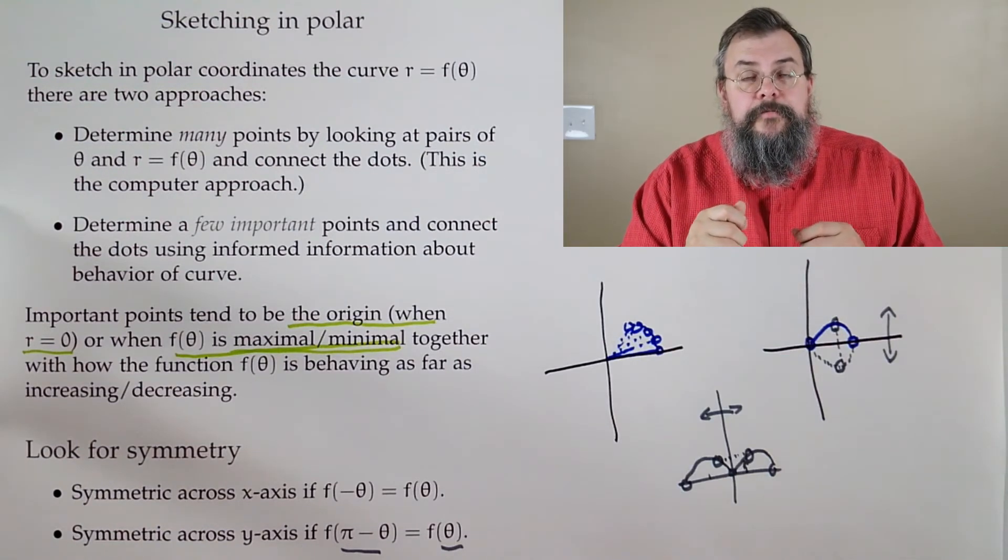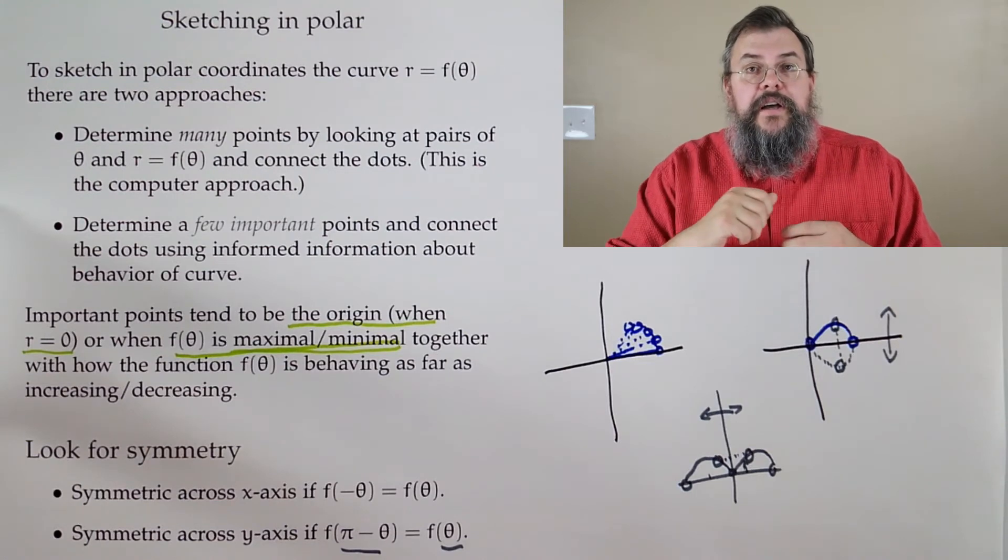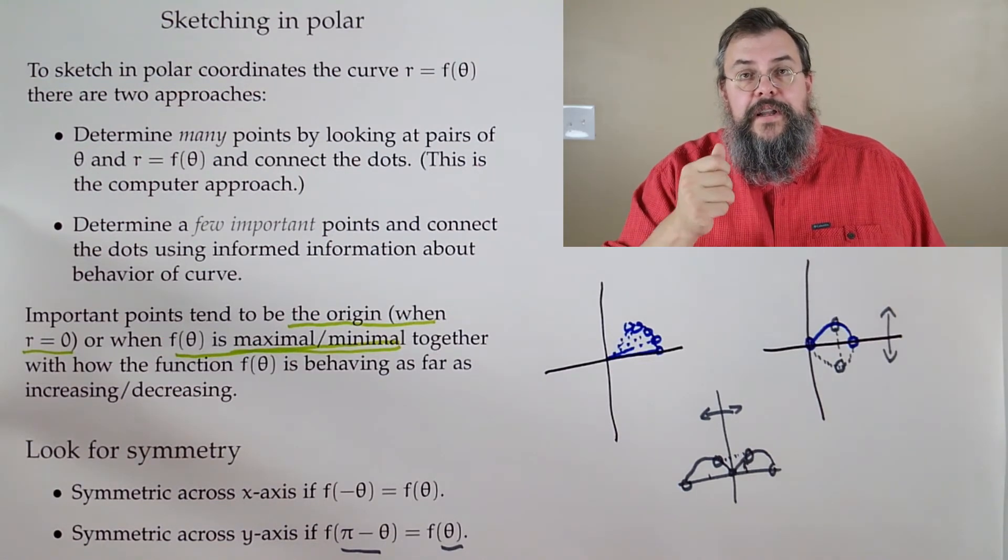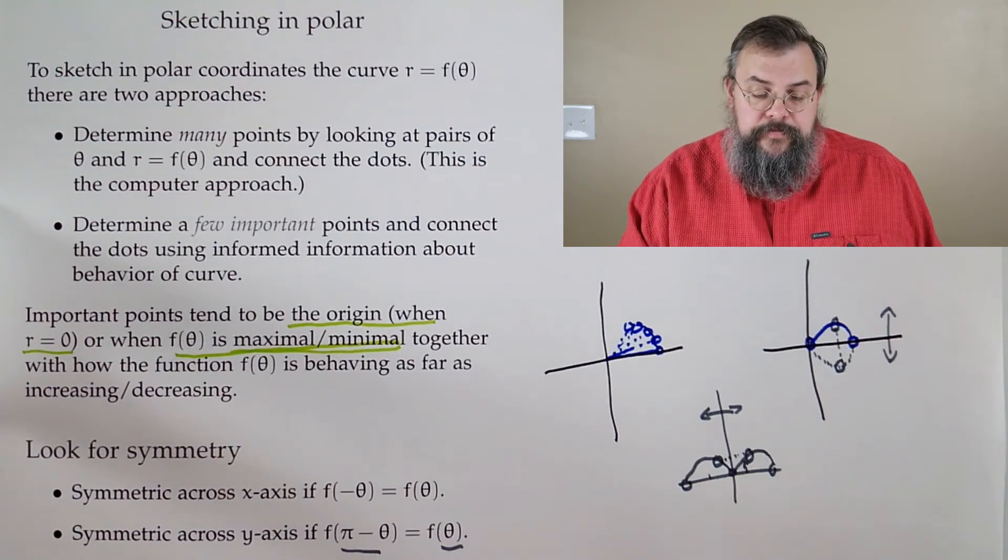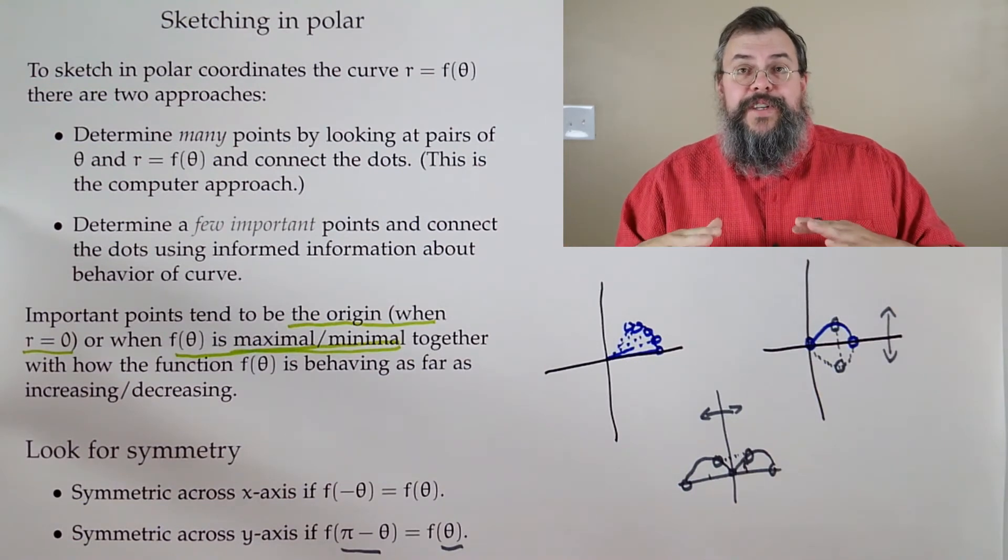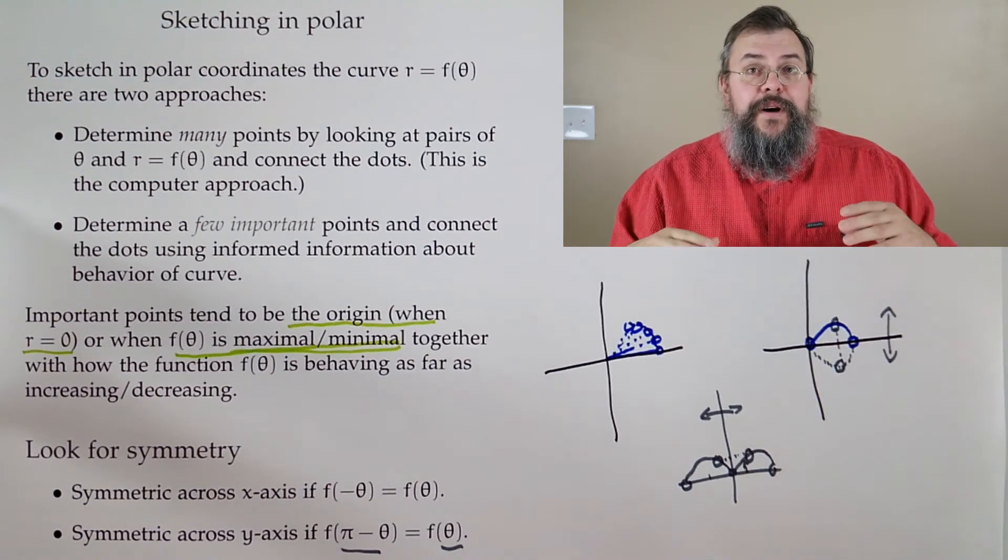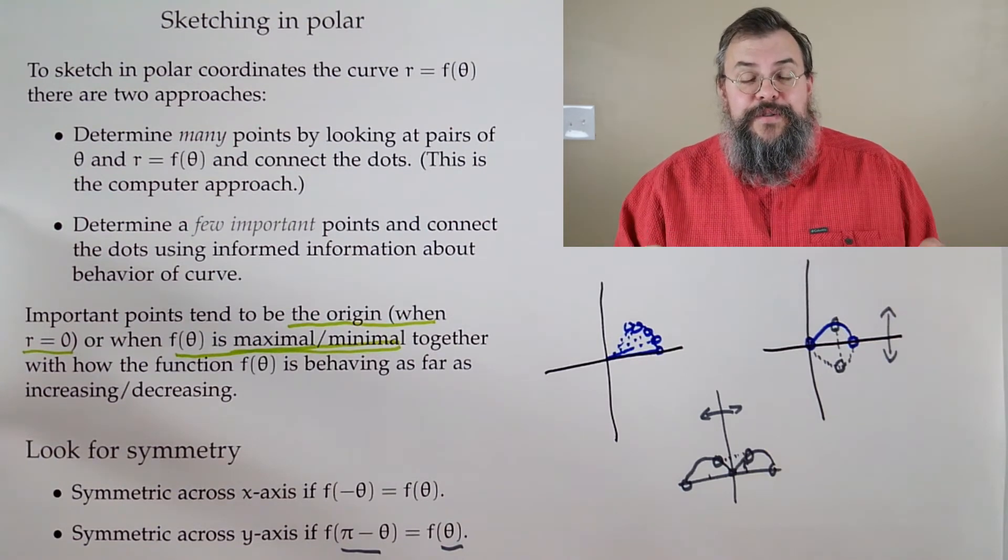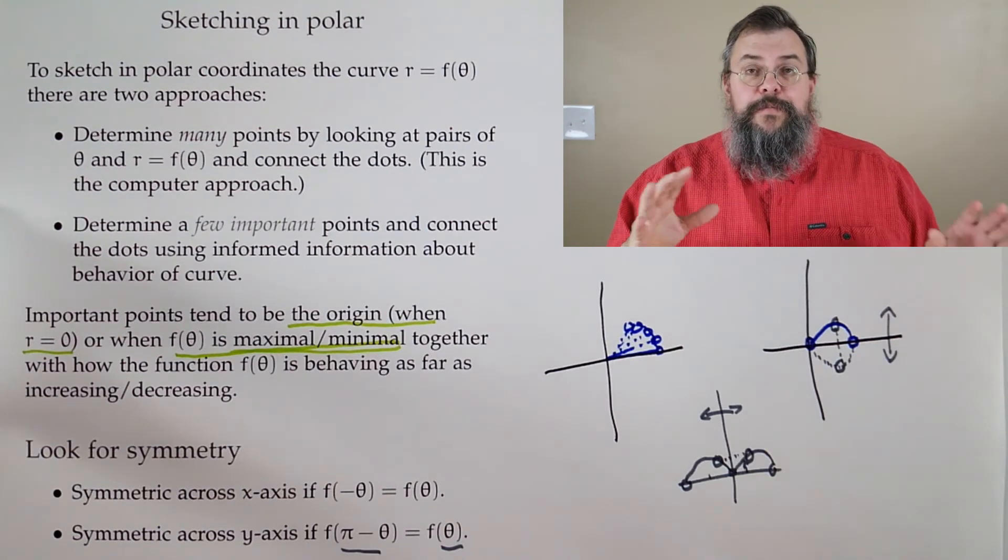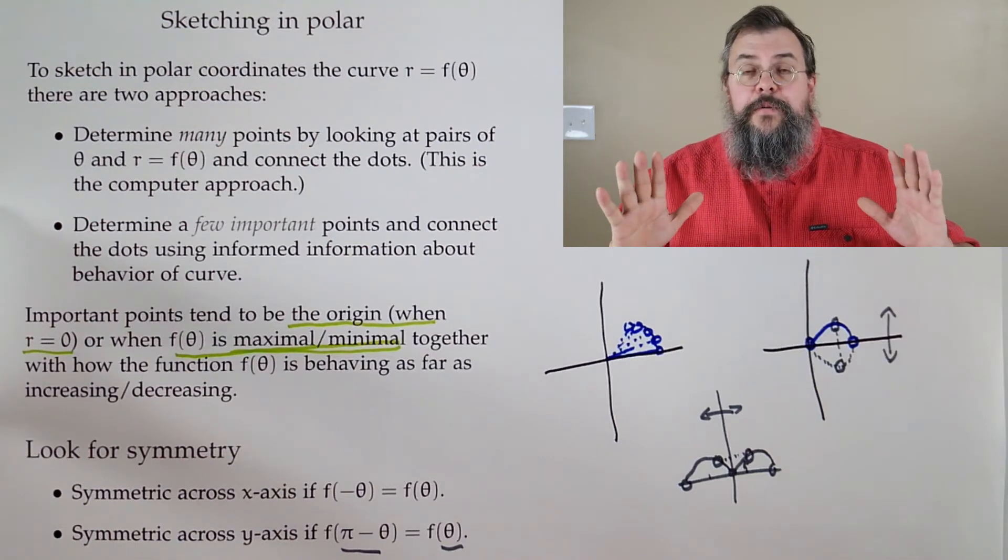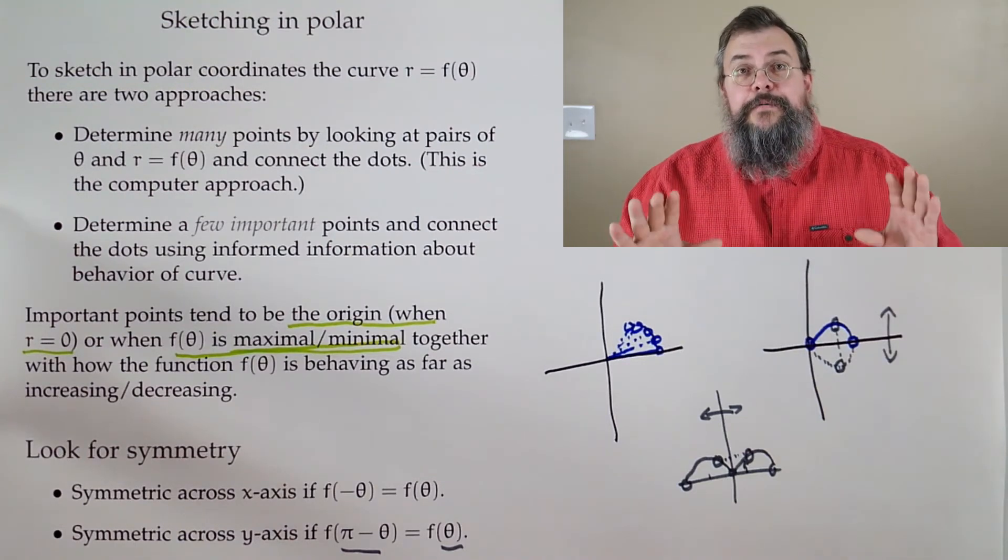One of the things you might ask is, well, how far do I have to go to capture everything? For that, you take a look and say, how long until I'm back to where I began? In other words, how many revolutions of two pi do we need to go until I'm right back where I start? That tells you how far you need to go. We're going to see lots of examples. We're going to see a few examples today when we sketch, but we're also going to be talking about doing some applications with polar curves.